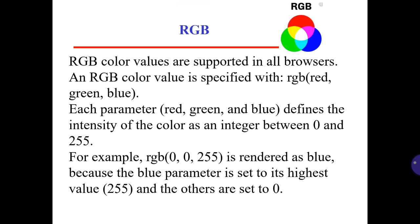RGB. RGB color values are supported in all browsers. An RGB color value is specified with red, green, and blue. Each parameter — red, green, and blue — defines the intensity of the color as an integer between 0 and 255. For example, RGB(0, 0, 255) is rendered as blue because the blue parameter is set to its highest value and the others are set to 0.